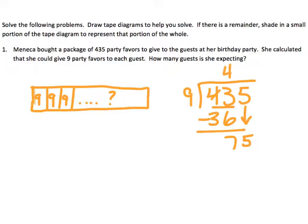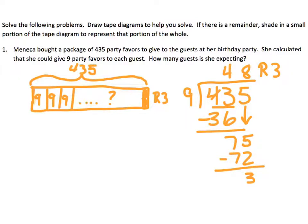And I know that nine times eight is 72. So I'm going to subtract that out, and I have a remainder of three. So I'm going to shade in a small area at the end of my tape diagram. And I'm just going to go ahead and label that there that that's a remainder of three. And I know that the total here of the tape diagram was 435. So I ended up with a total of 48 guests. So I should probably write that out in a statement.